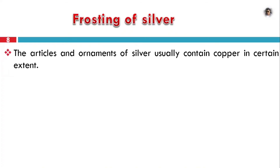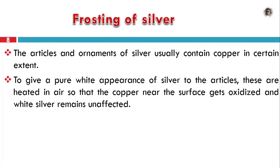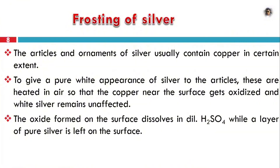Silver articles or ornaments usually contain copper as an alloying metal. Pure silver is white in color, but copper gives it a yellowish tint. The silver compounds used to be pure white. Copper near the surface gets oxidized when exposed to air, while silver remains unaffected. Copper is easily oxidized to copper oxide, but silver itself is not easily oxidized.